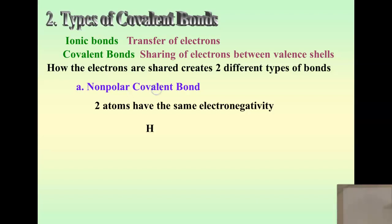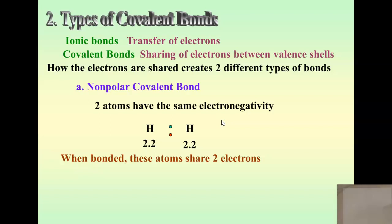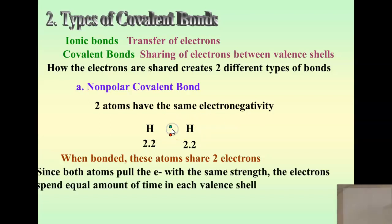For example, let's take hydrogen and hydrogen. If you look up the electronegativity of hydrogen, it's about 2.2, and the other hydrogen is also 2.2. So if these two were having a tug-of-war for the electrons, no one would really win because they're both pulling with the same ability, the same strength. The two electrons spend an equal amount of time around each hydrogen atom. Since both atoms pull the electron with the same strength, the electrons spend equal time in each valence shell.